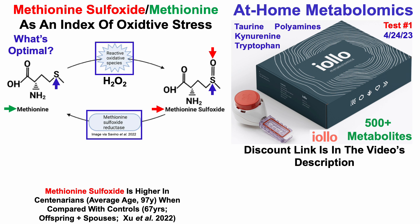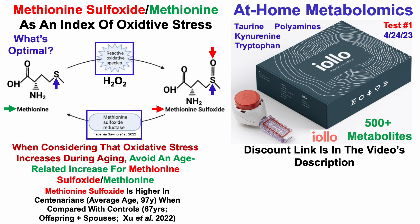In terms of what's optimal, a 2022 paper showed that methionine sulfoxide individually was higher in centenarians and near-centenarians (average age 97) compared with their offspring and spouses of offspring (average age 67). In other words, there was an age-related increase for methionine sulfoxide as part of this index of oxidative stress. So, just like cystine divided by cysteine, avoiding an age-related increase for methionine sulfoxide divided by methionine is atop the list.